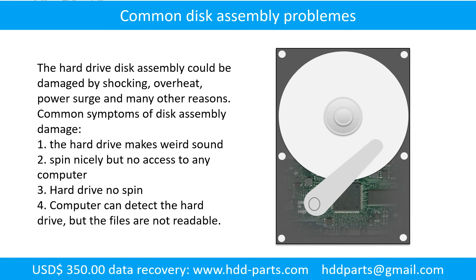If the hard drive disk assembly is damaged, we can do disk data recovery to recover the data from the disks. The common symptoms of hard drive disk assembly failure are: 1. Hard drive makes weird sounds. 2. Spins nicely but no access on any computer. 3. Hard drive no spin. Tip: if the storage is configured as mirrored hard drives, you can take the bad hard drive out and put in another same size or bigger hard drive, and the storage will mirror the data to the new hard drive automatically. If this doesn't work, that means both mirrored hard drives are damaged, or the storage was configured as RAID 0, meaning the two hard drives work differently.